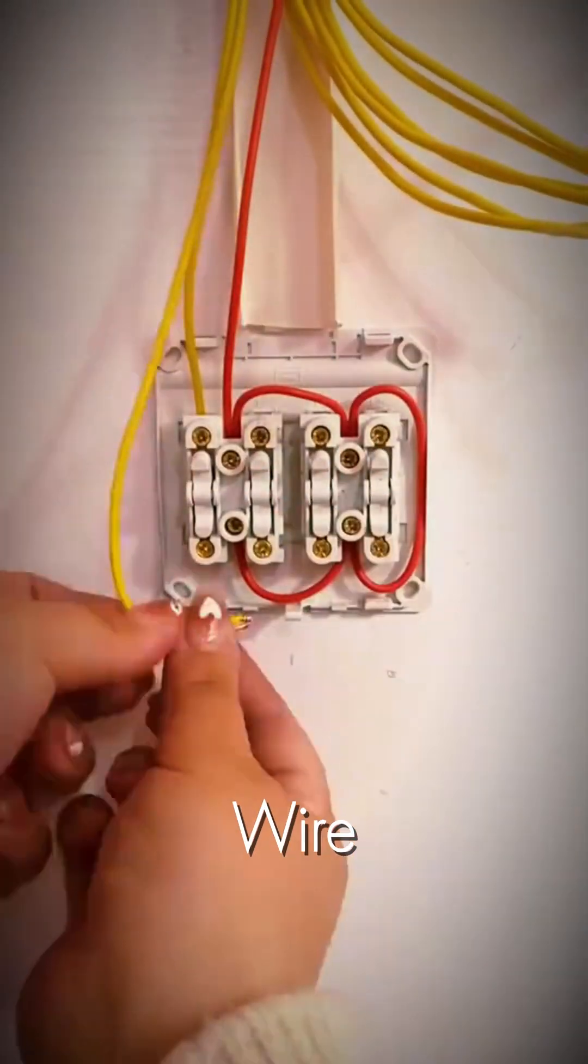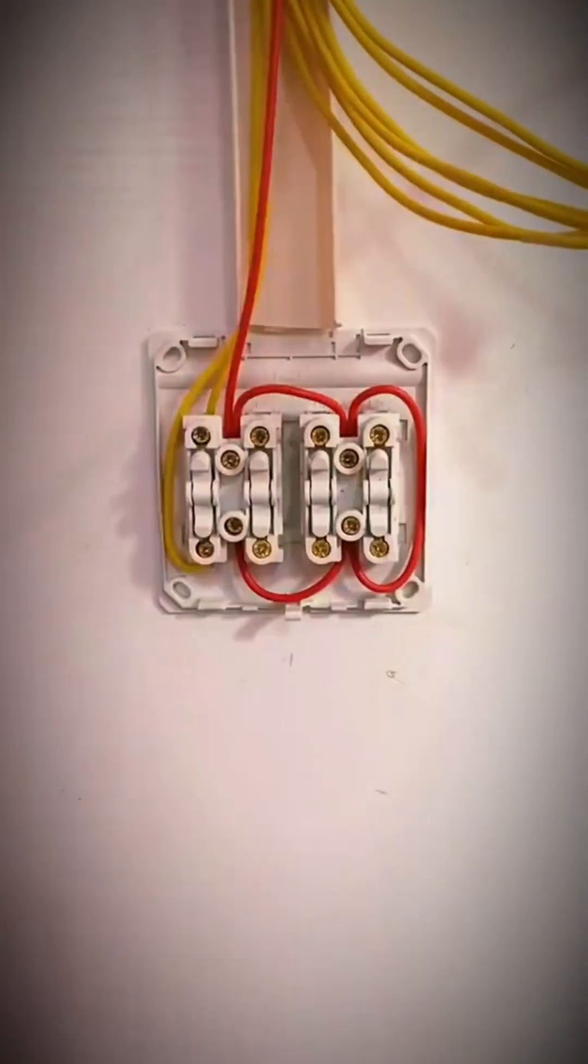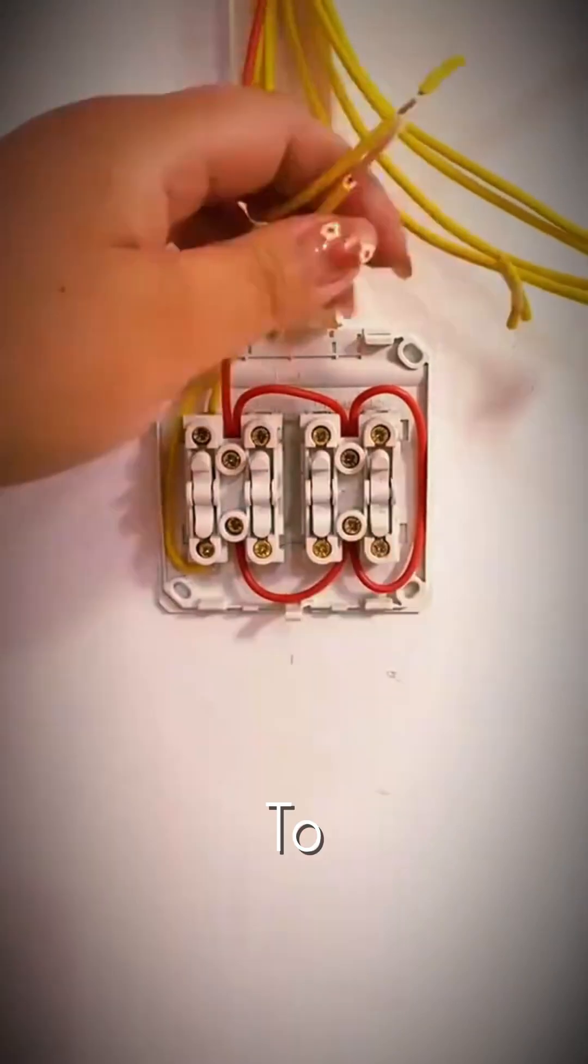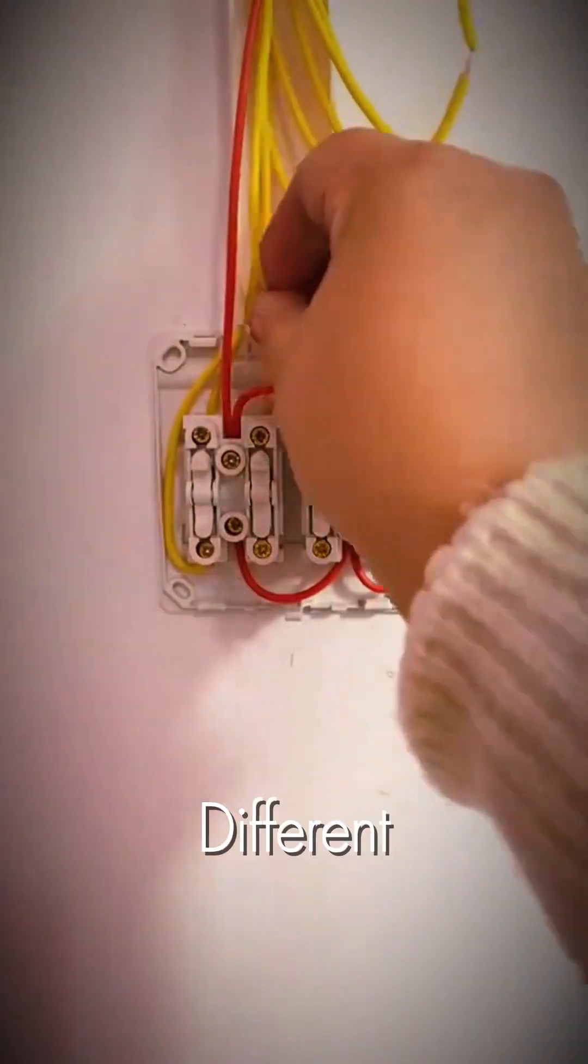Each yellow wire connects to a separate output terminal. This allows every switch to independently control a different light fixture.